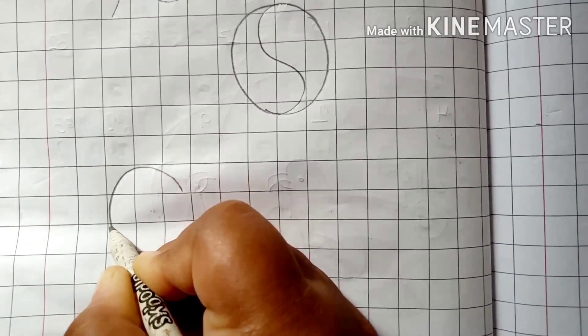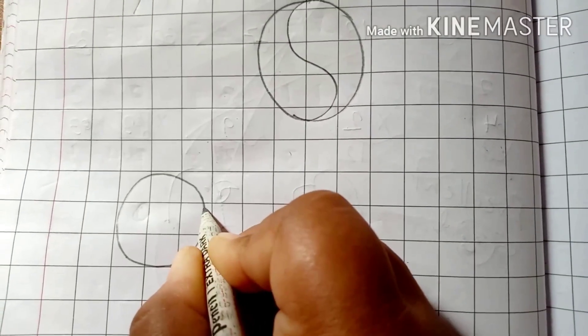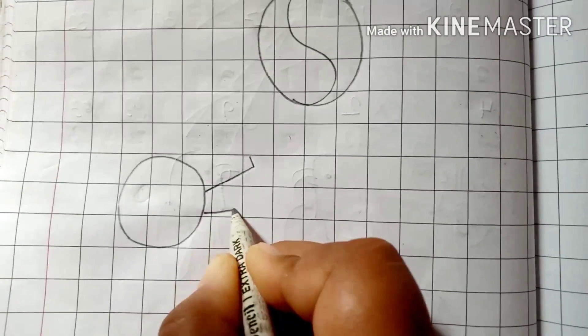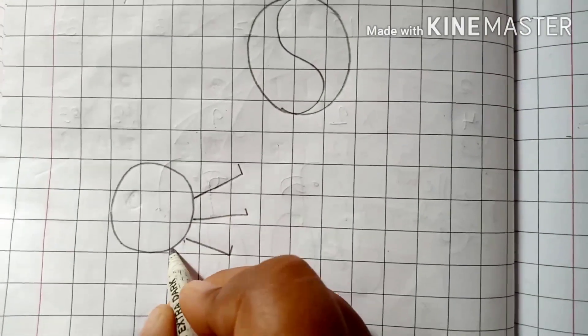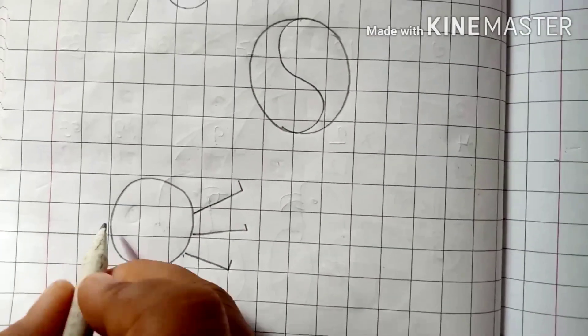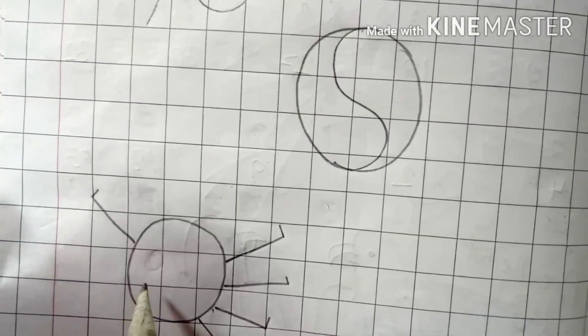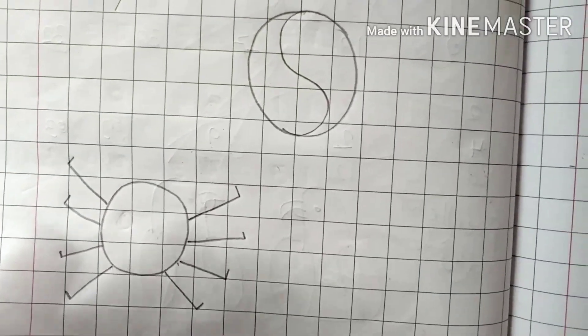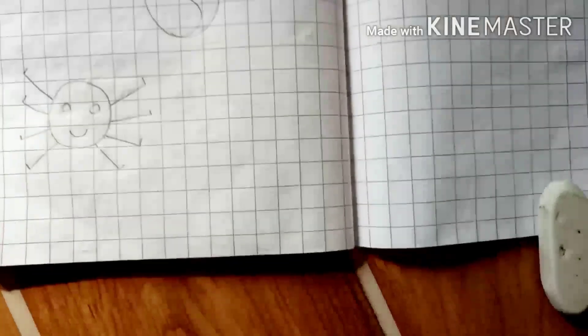Now, we will make another circle here. And then, we will draw the legs. We will make a spider. How many legs does a spider have? Eight. So, four here. And four this side. So, these are the legs of the spider. And these are the eyes. A smiling spider.